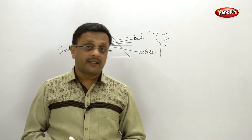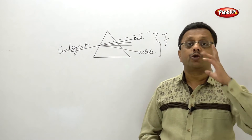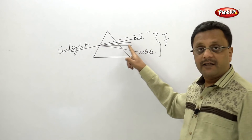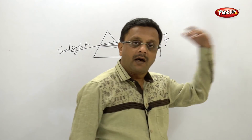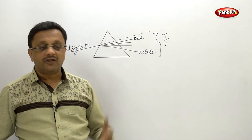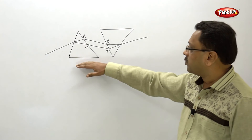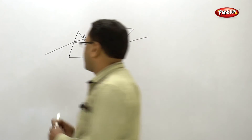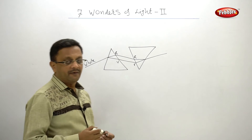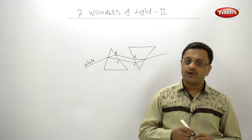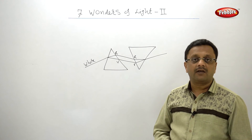Sir Isaac Newton did one more interesting experiment. In the first case he used only one prism. In the second case he used two prisms — whatever color band he got on the first side became the incident ray for the second prism, and from the other side of the prism he got white light again. He wanted to make sure that the spectrum was not due to the glass prism itself but was a property of white light.